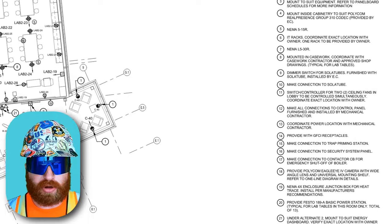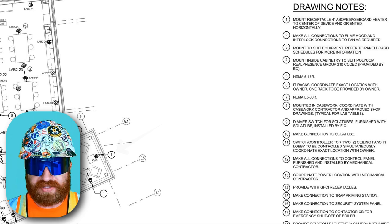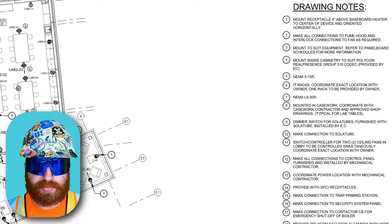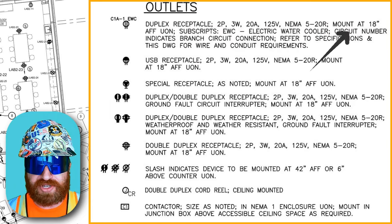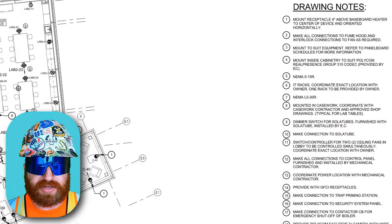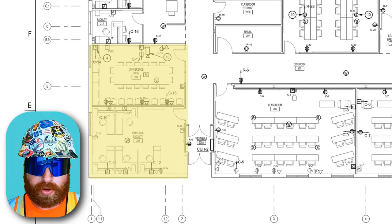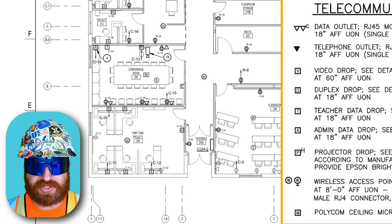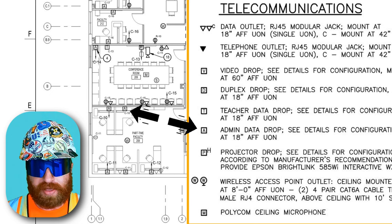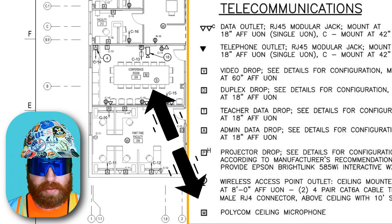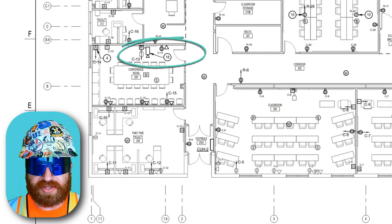Jumping to the top right on this page, there are all kinds of drawing notes with circles relating back to this specific page. Note one says to mount receptacles four inches above the baseboard heater — the standard code height in the United States for a receptacle is 18 inches above finished floor, which is why this non-typical height is called out. Moving to the left side and zooming in on two rooms, we can see: W stands for wireless access point, A stands for admin data drop, M stands for polycom ceiling microphone — which makes sense since this is a conference room — and there's a camera with note 18.